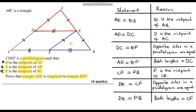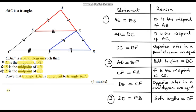We can now see that these two triangles have the same corresponding side lengths, so they must be congruent through SSS. The three pairs we found were: AE equals EB, AD equals EF, and DE equals FB. Our concluding statement: triangle ADE is congruent to triangle BEF, and that is by side, side, side.